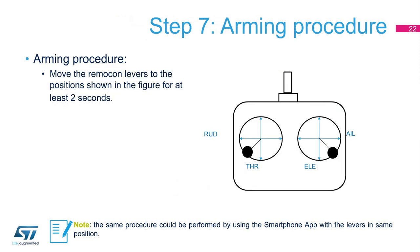The first operational tests should be performed without the propellers mounted, to verify that connections are correct, the motors function, and the RIMACON connection is established. For safety reasons, the drone is initially disarmed. Even if connection with RIMACON TX is established and throttle is at full scale, the motors are intentionally not driven — the red LED on the ST EVAL FCU-001V1 blinks. To allow flight, you must perform an arming procedure. Arming is achieved by moving the RIMACON levers to the positions shown in the figure for at least 2 seconds, after which the red LED will stop blinking and remain on.